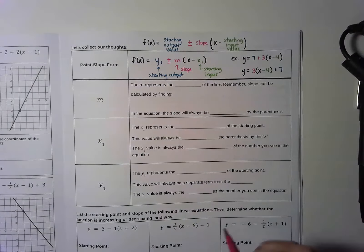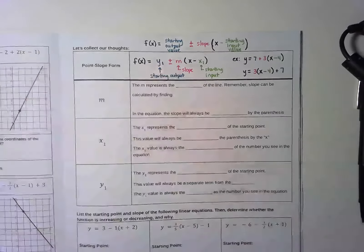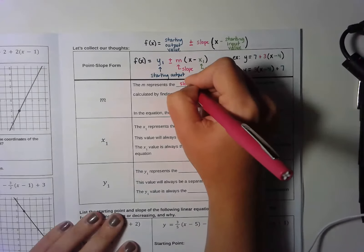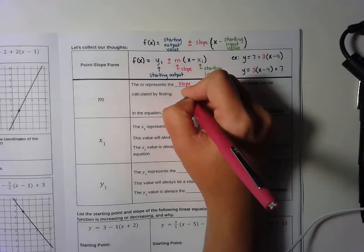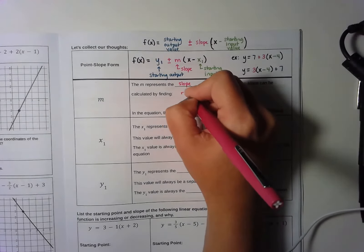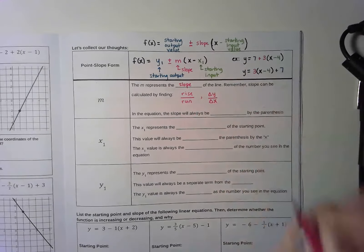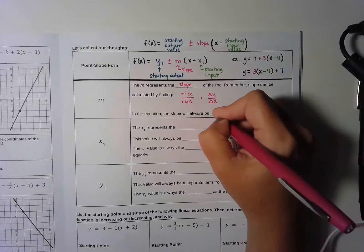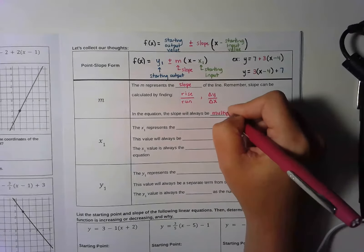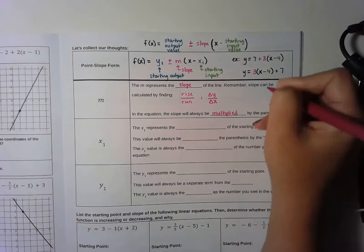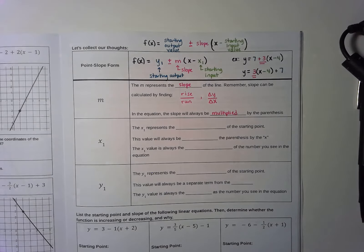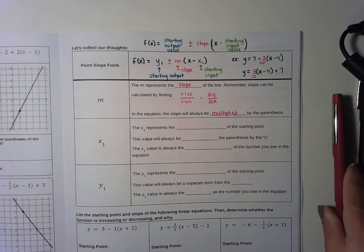Now let's formally write down what all of these different pieces of the equation represent. In the equation, this number is going to be m — it represents the slope. Slope can always be found by doing rise over run, or change in y over change in x. In the equation, the slope will always be multiplied by the parentheses, so the slope is always the number outside of the parentheses — whether the parentheses is first or second in the equation.